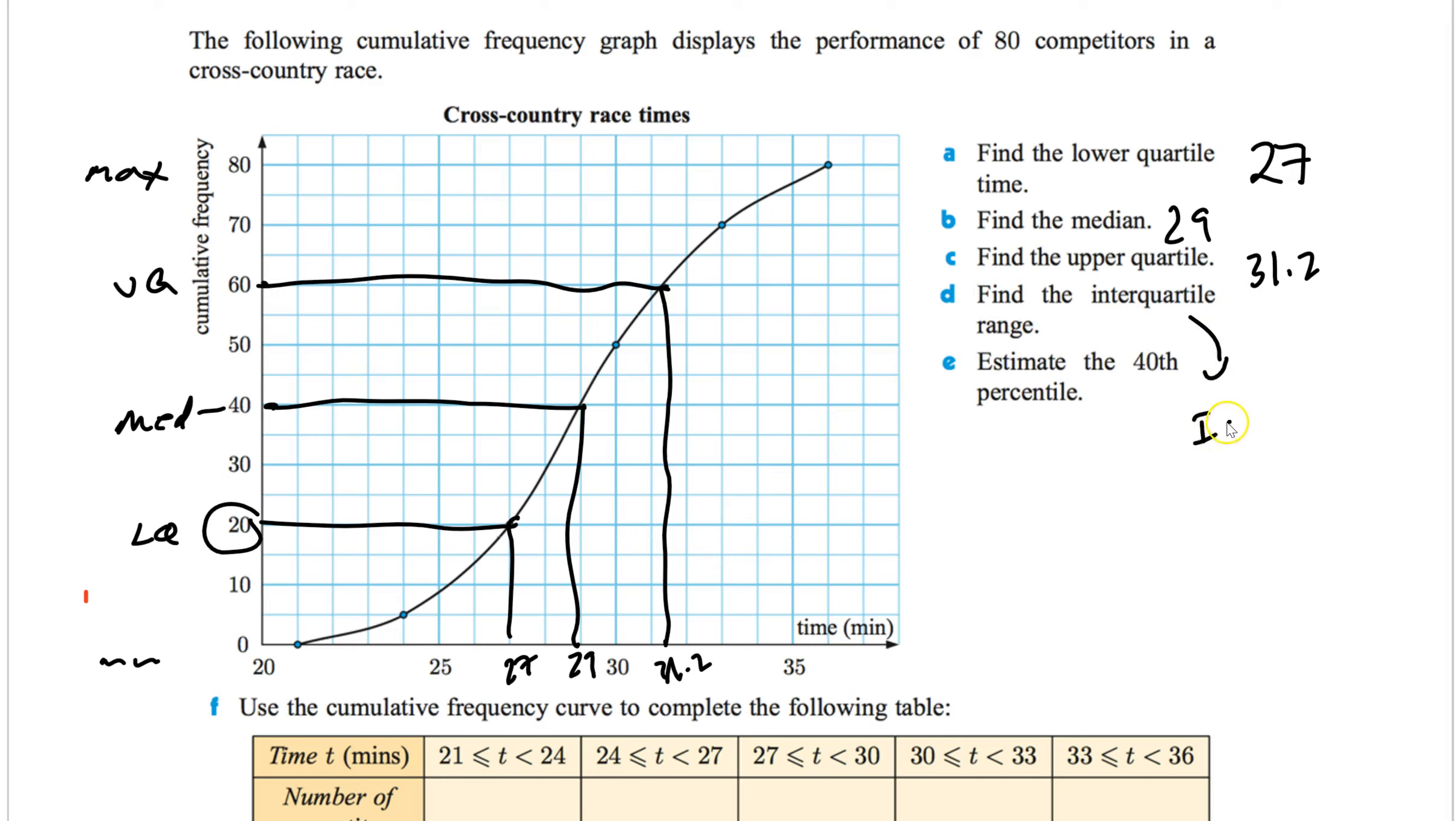Find the interquartile range. Okay. Well, that's IQR, which is Q3 minus Q1. My Q3 is right here, 31.2. My Q1 is up there at 27. So I subtract that. I get 4.2.